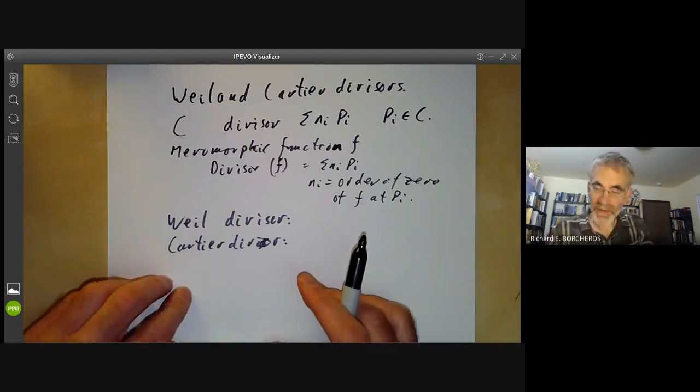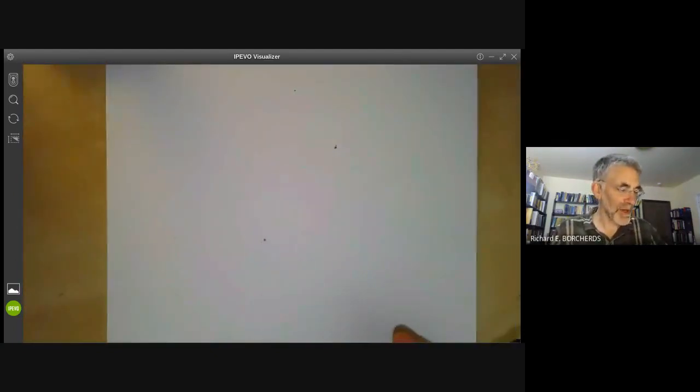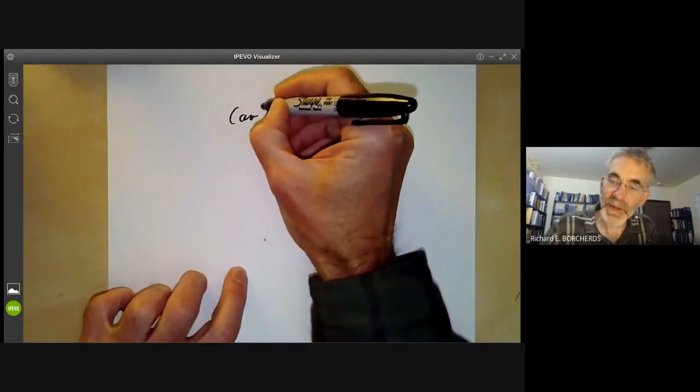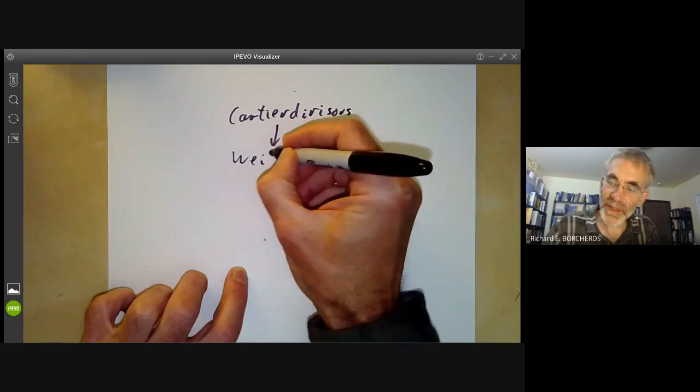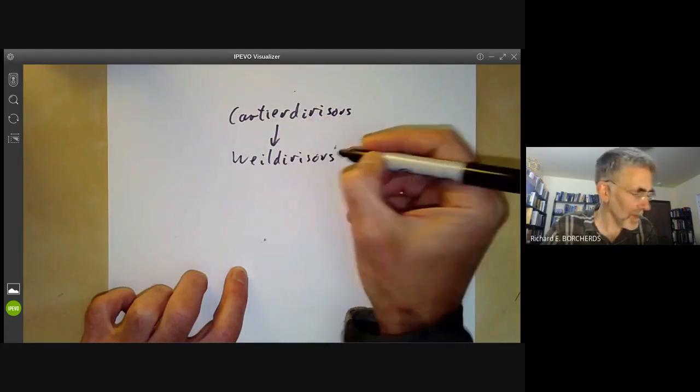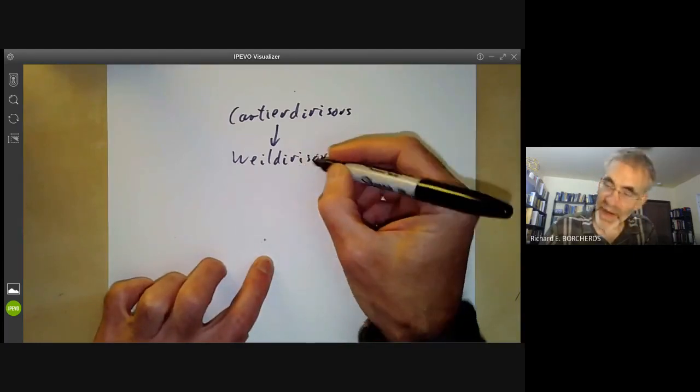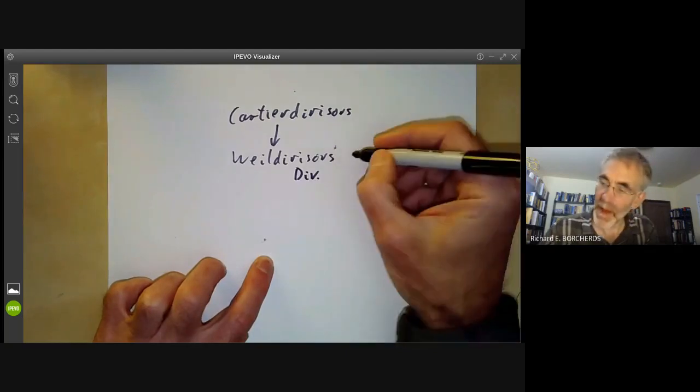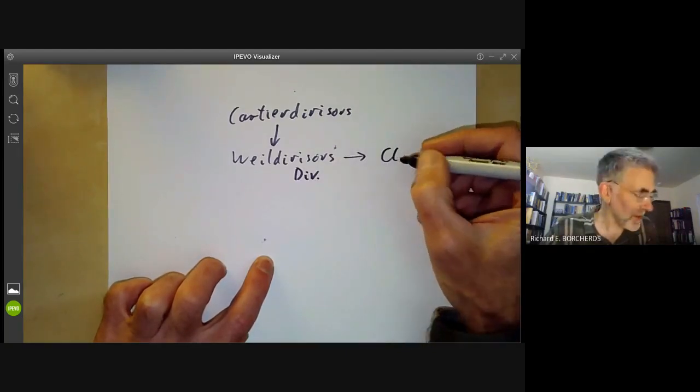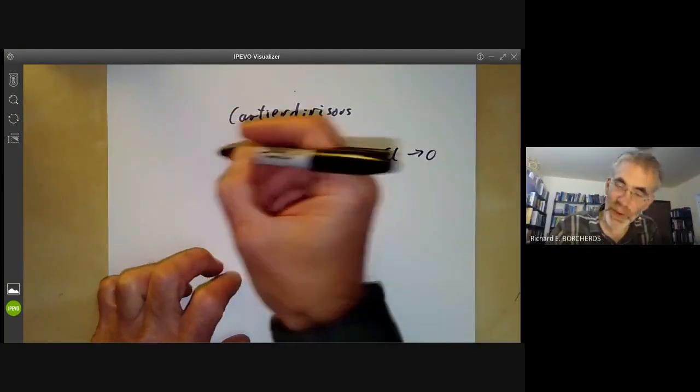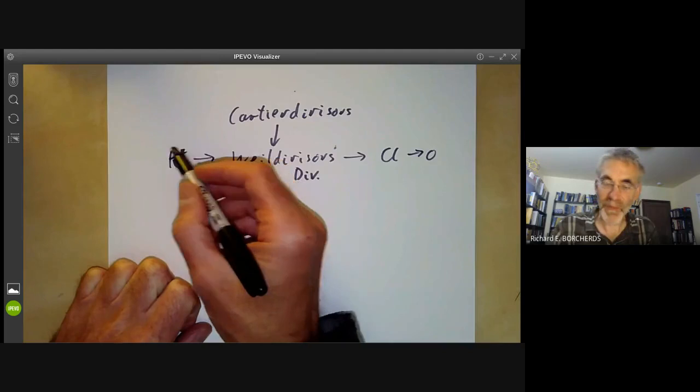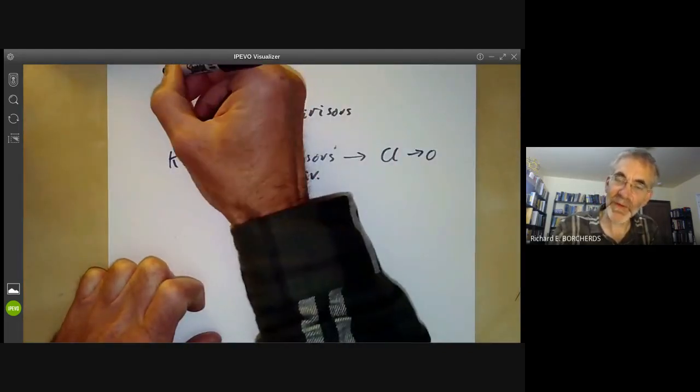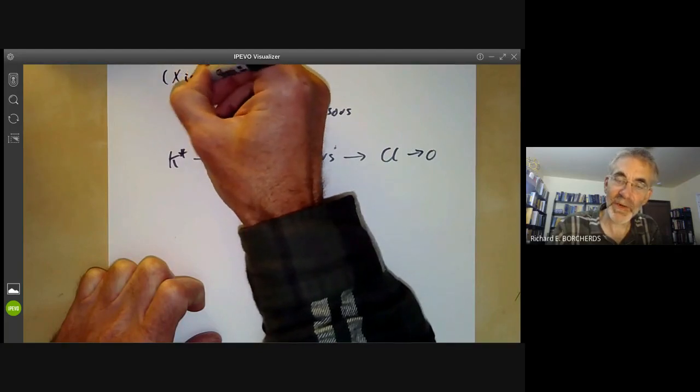Let me give an overall summary of what's going on. We're going to introduce a group of Cartier divisors, which maps to the group of Weil divisors. The group of Weil divisors is often denoted by div for divisor, and this maps to a group of Weil divisor classes, which is the quotient of Weil divisors by K star, assuming the scheme X is integral for simplicity.